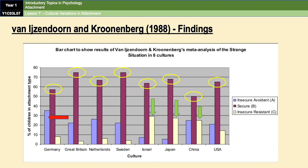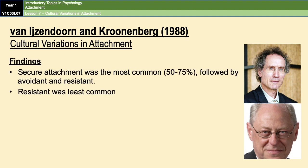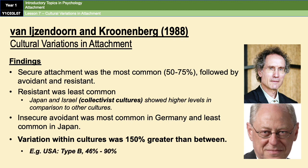Those are results you could be asked to pick out of a chart in an exam. Secure attachment was the most common. Interestingly, Japan and Israel both had very high levels of insecure resistant — and Japan and Israel are also known as collectivist cultures. Collectivist cultures place a lot of importance on the welfare of the group rather than the welfare of the individual.